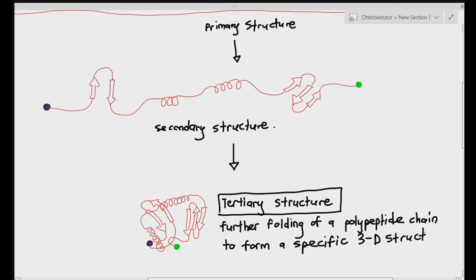Looking at the diagram, I've placed a purple dot and a green dot on the secondary structure. Notice they were far away from each other — that's the beginning and end of the polypeptide chain. Now look at their distance in the tertiary structure — they're quite close to each other because the chain has folded further. Amino acids that were at great distances from each other are now quite close, because the chain has folded into a three-dimensional structure.